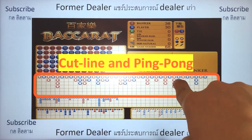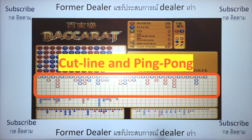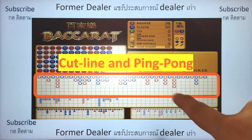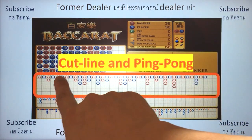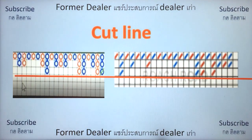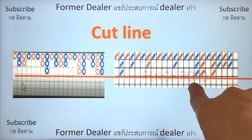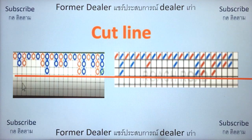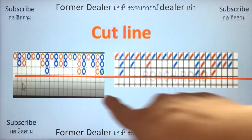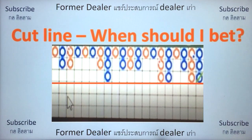Ping pong is easy — everyone knows it: banker, player, banker, player. This graph is best used to find a cut line and a ping pong. As I've said in previous videos, you also need to look at the Cockroach Pick to confirm the cut line is reliable — whether it's a three-cut or four-cut line. When should you bet? Once you identify the cut line, for example when they cut at three every time.